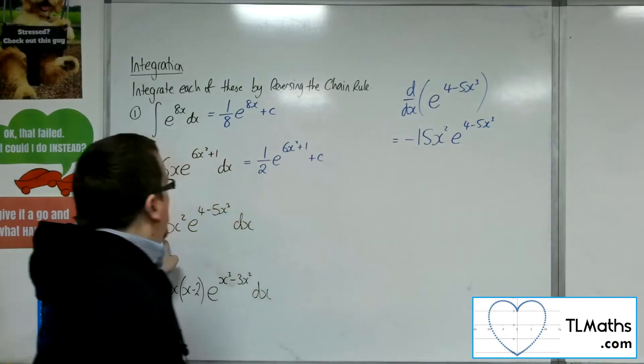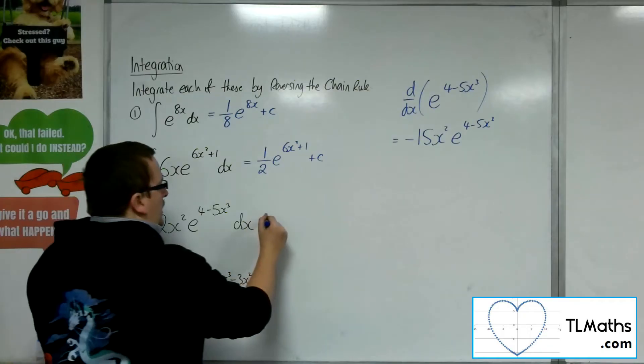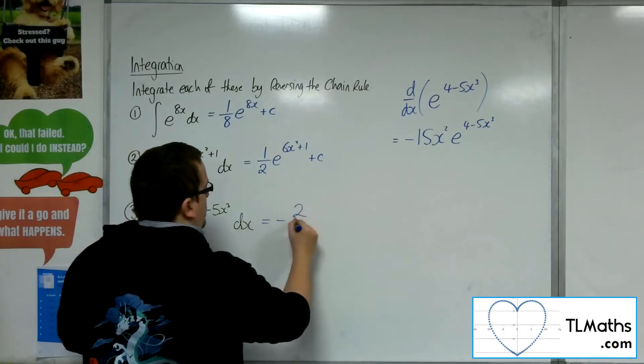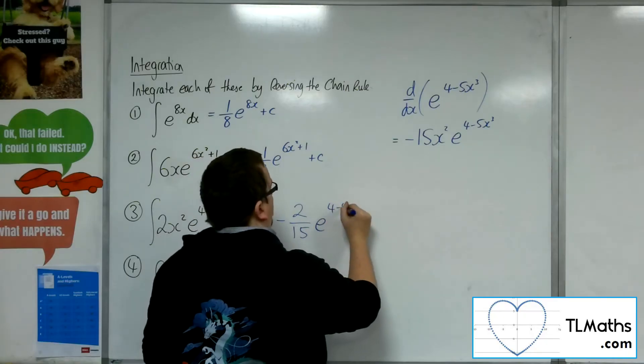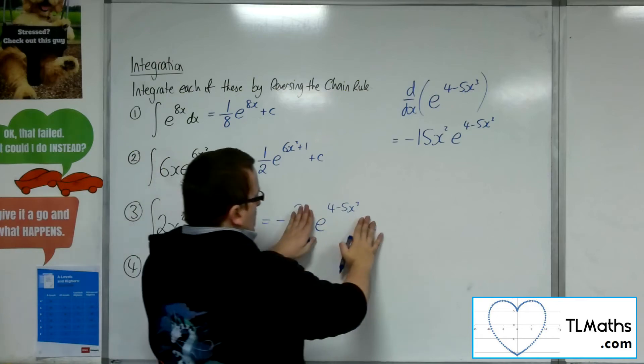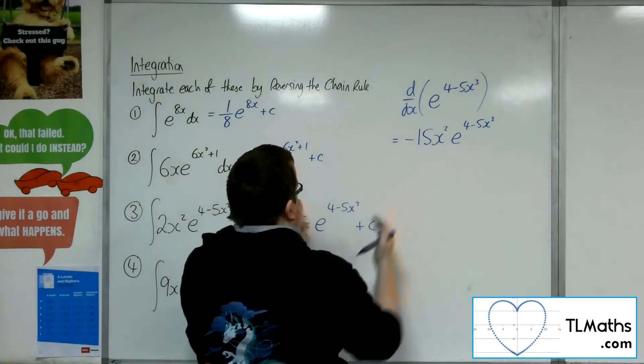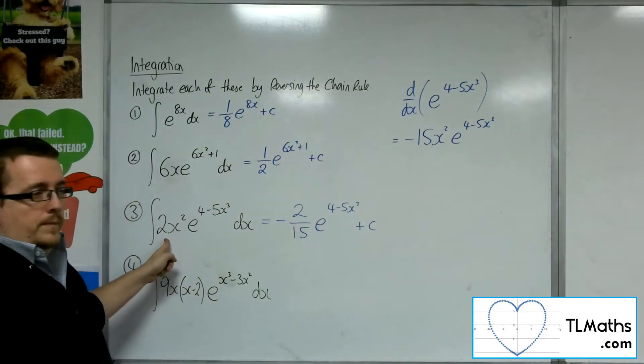So I've got a 2 there, I've got a minus 15 there. So this will be minus 2 fifteenths of e to the 4 minus 5x cubed plus c, because I know that that differentiates to that, so minus 2 fifteenths of this will get me back to the 2.